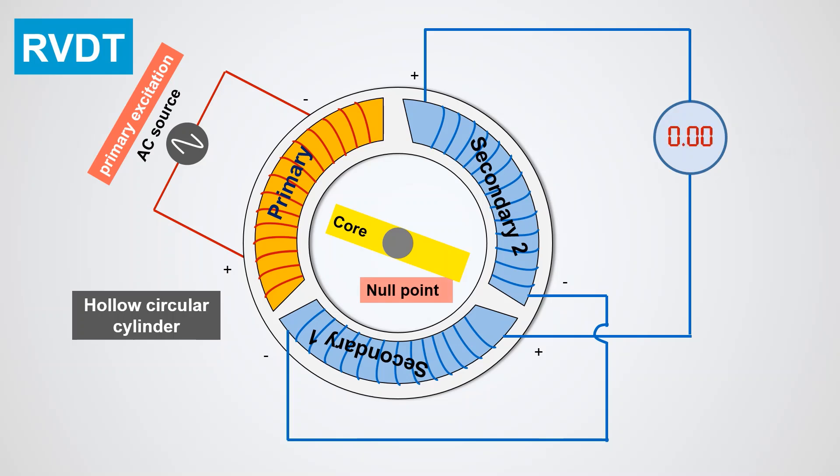When the core is at the center, called a null point, zero voltage appears at the secondary output.